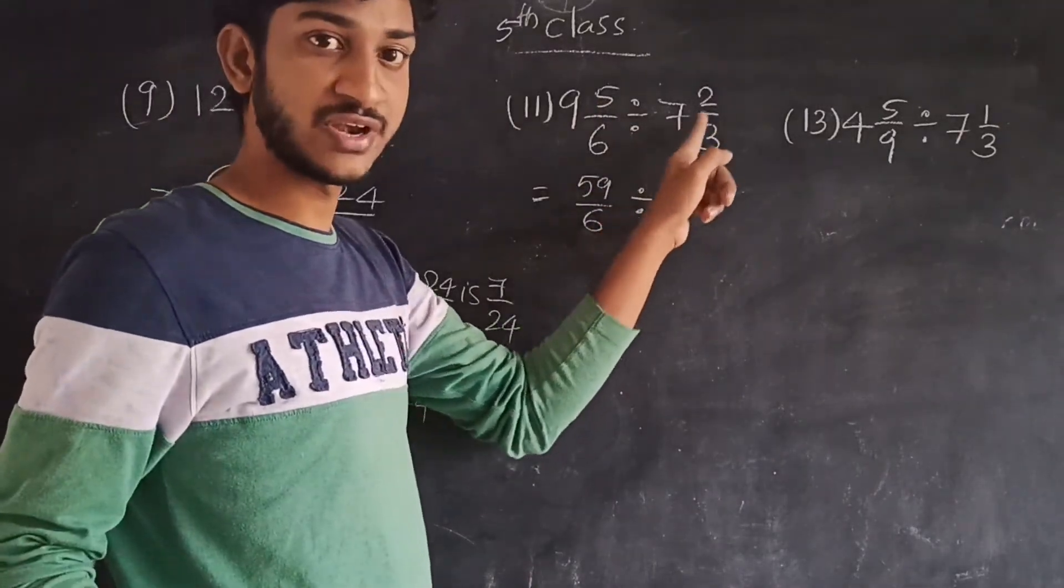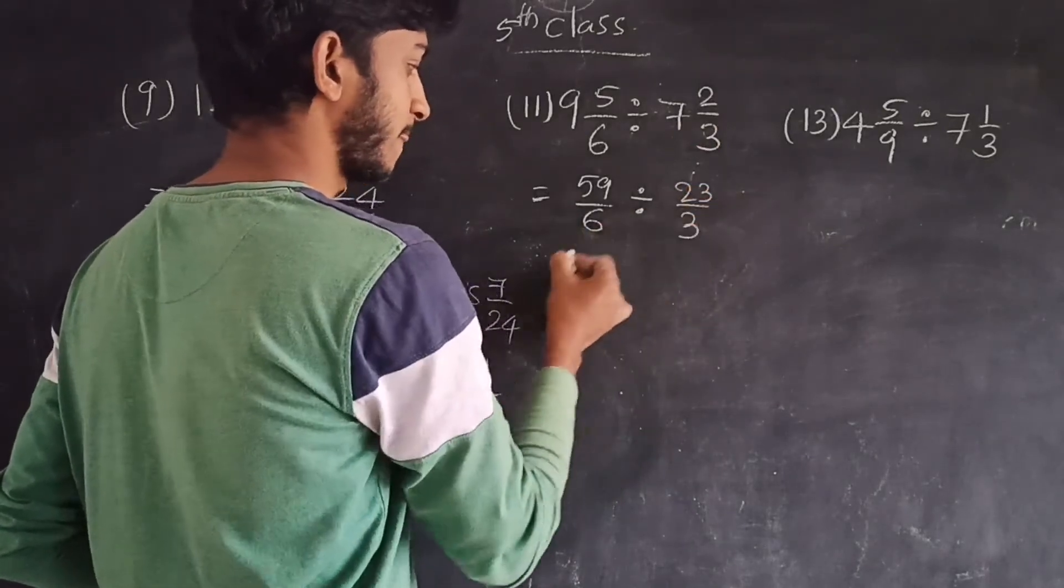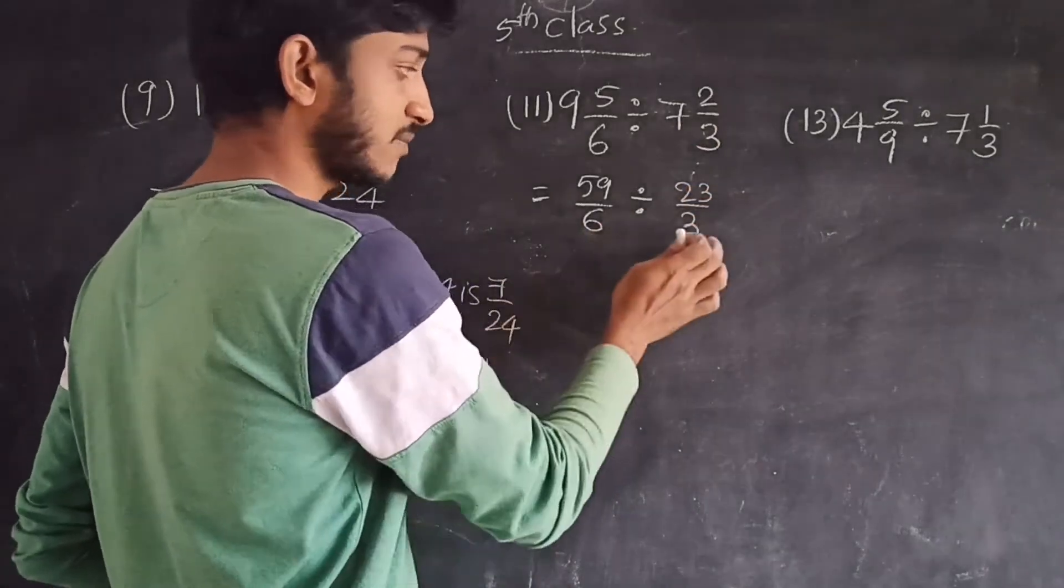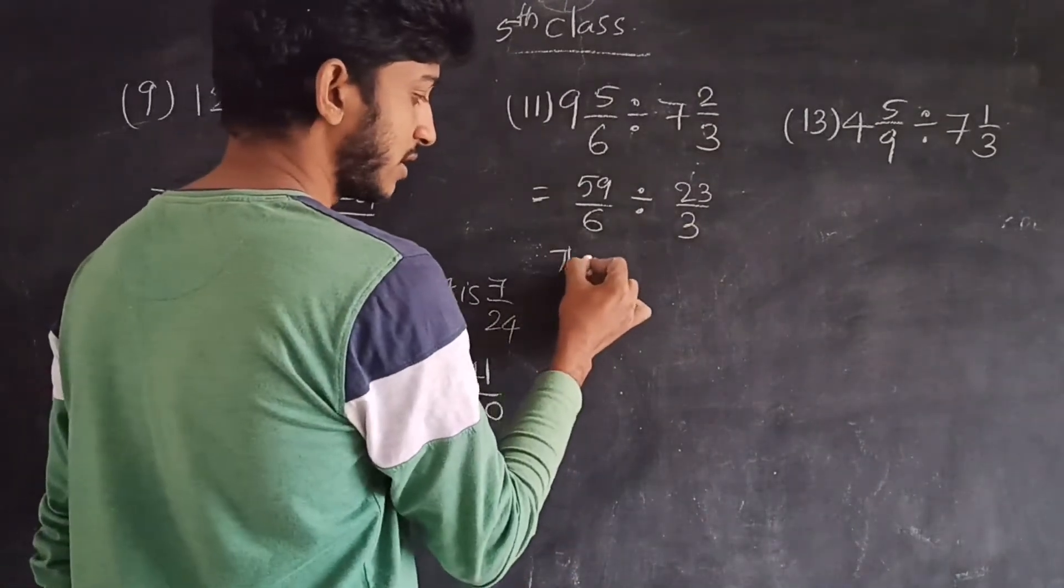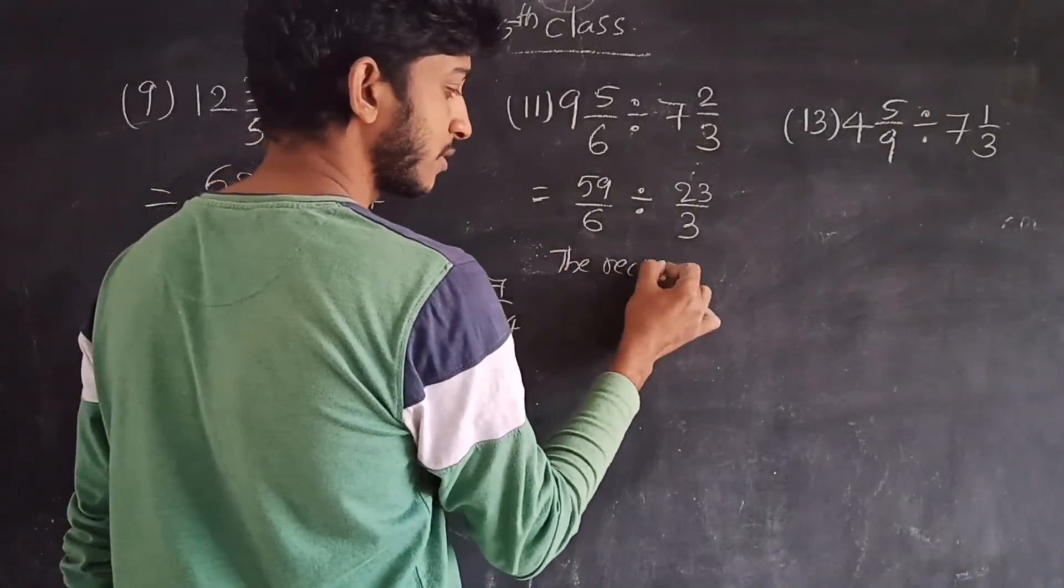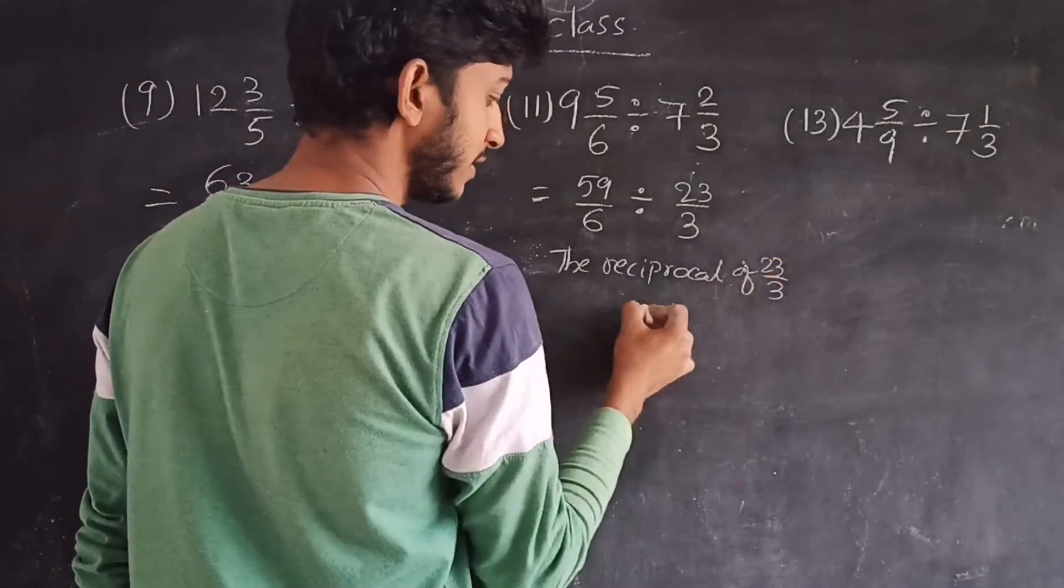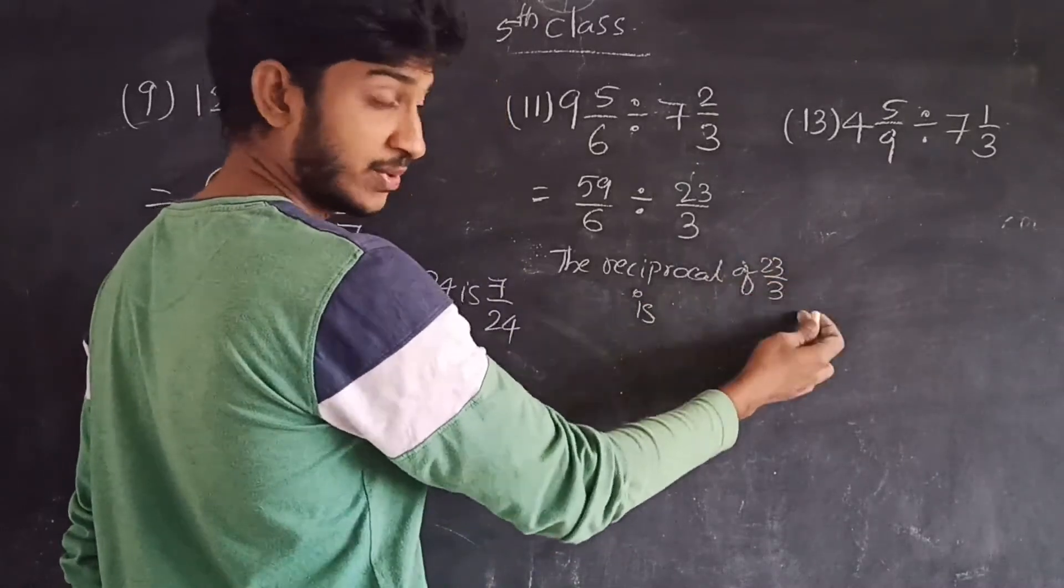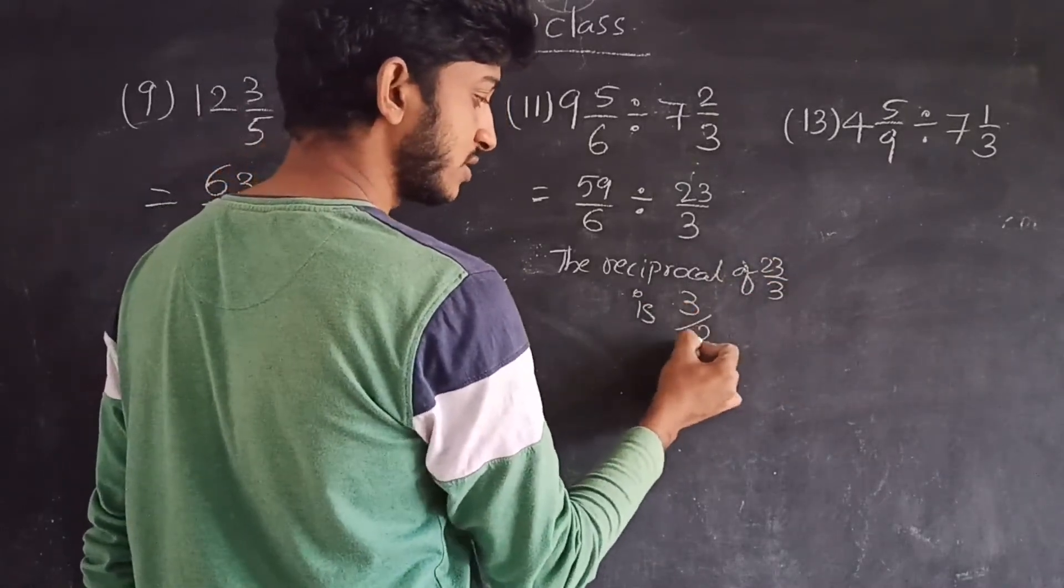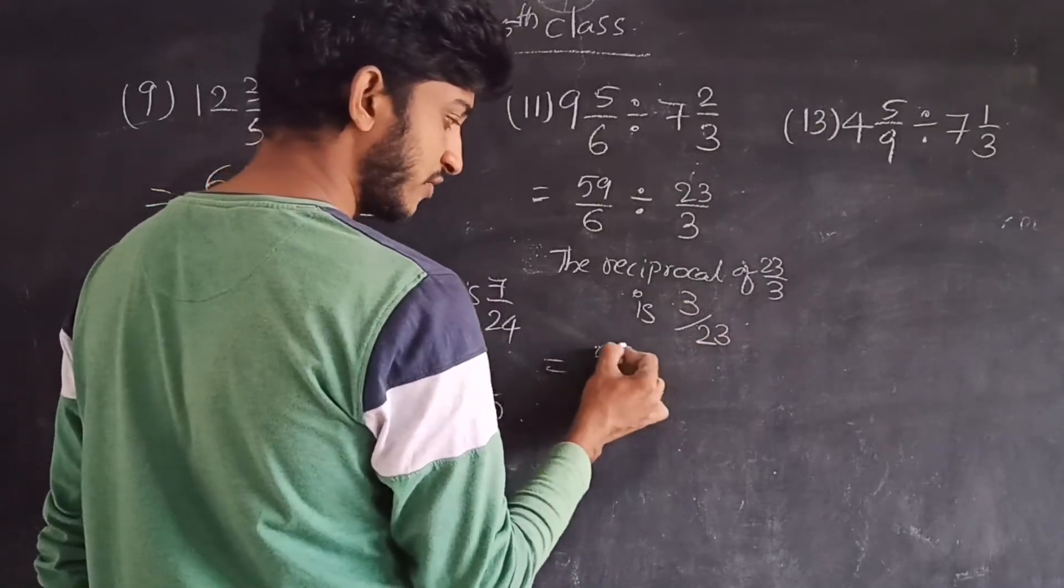Divided by 7 2/3 means 3 times 7 is 21, 21 plus 2 is 23, so 23 by 3. Okay, so the reciprocal of 23 by 3 is 3 by 23. The reciprocal means denominator becomes numerator and numerator becomes denominator, which is 3 by 23.